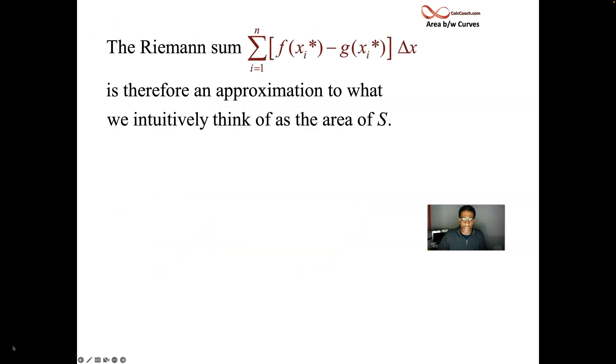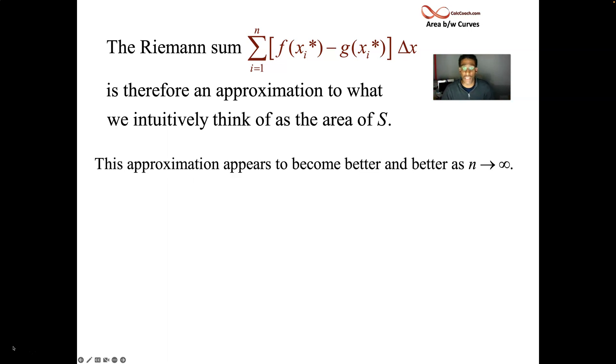And so, we'll have a Riemann sum. That's just a symbol to represent the number of rectangles. Eight, six, manageable from a human's perspective. Anything above that, a computer should be doing. f of xi star minus g of xi star is the height. Delta x is the width. And as the number of rectangles increases, the delta x gets smaller, and we'll have the exact area between the two curves.